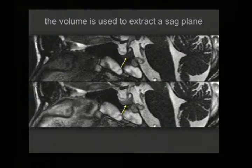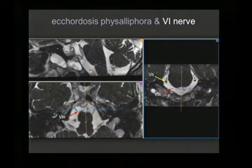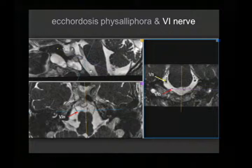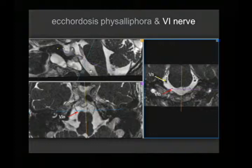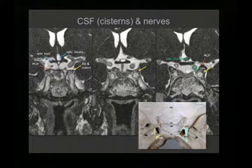Before contrast agent, the hypophysis cannot be separated from the floor of the sella, but imaging shows different signals between the two structures. Being a volumetric acquisition, if you orient the plane along the path of the sixth nerve, you can detect the position and spatial relationship of the echordosis physaliphora with the sixth nerve on both sides — very useful when planning an endonasal approach, as was done in this case.